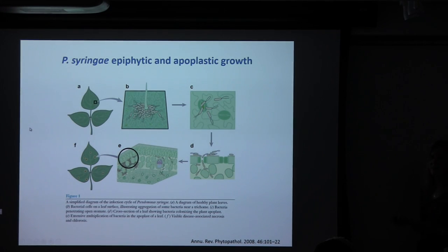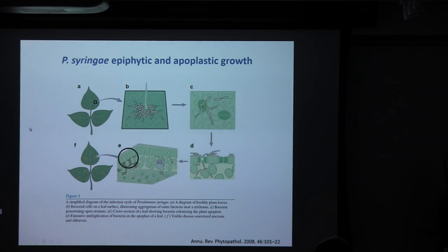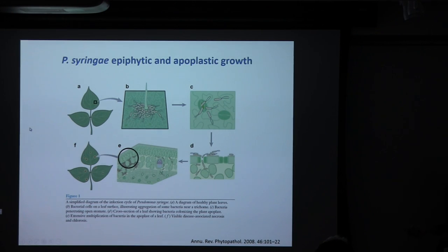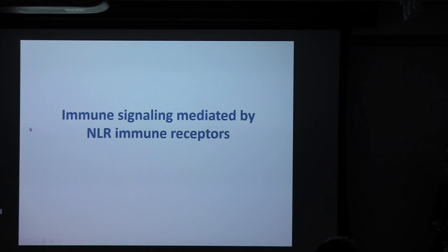First I'll talk about Pseudomonas syringae and our work with Arabidopsis. Pseudomonas syringae can be divided into different pathovars, each causing a distinct disease. Pseudomonas in general are pretty good epiphytes — if you sample the surface of a plant leaf, Pseudomonas are a core component of the phyllosphere microbiome. But pathogenic Pseudomonas need to gain entry into the plant interior to cause disease. They can do this by swimming through open stomata or wounds, then multiply in the apoplast or the space between mesophyll cells. In susceptible genotypes lacking corresponding immune receptors, you can get quite high bacterial titers and visible disease symptoms.